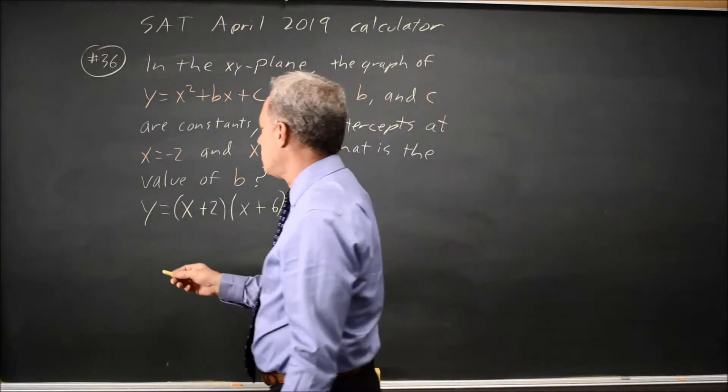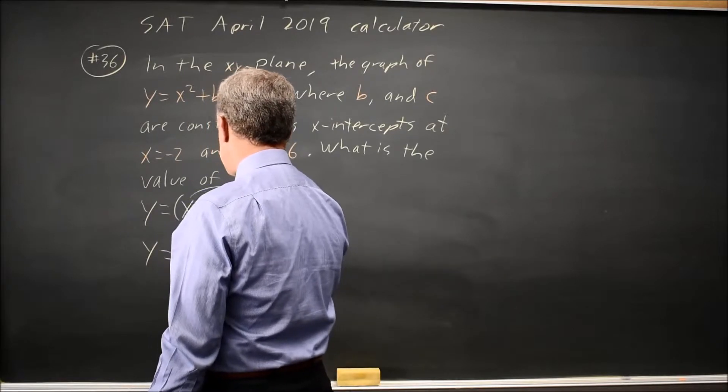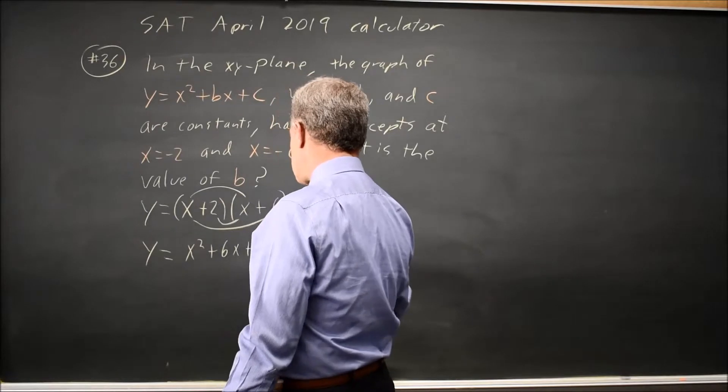FOIL gives us y equals x times x is x squared, x times 6 is 6x, 2 times x is 2x, and 2 times 6 is 12.